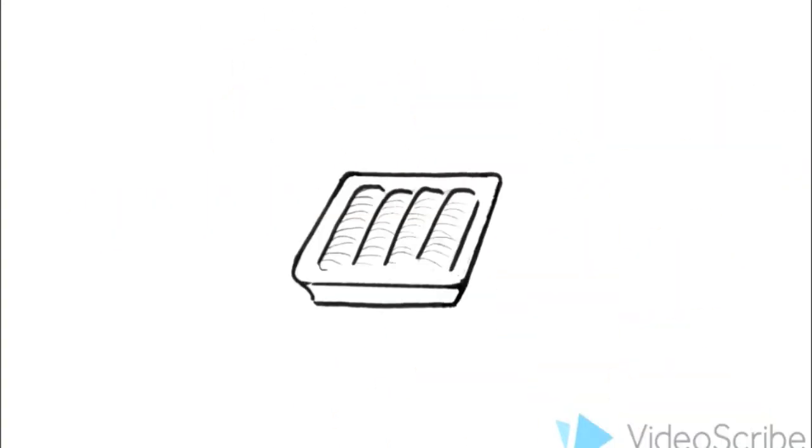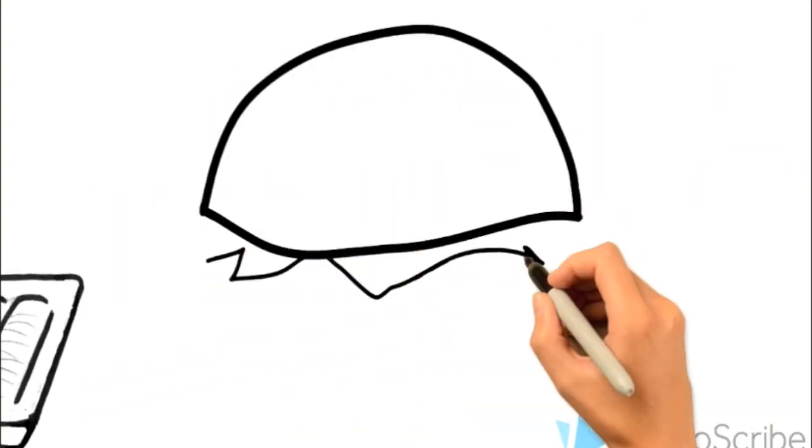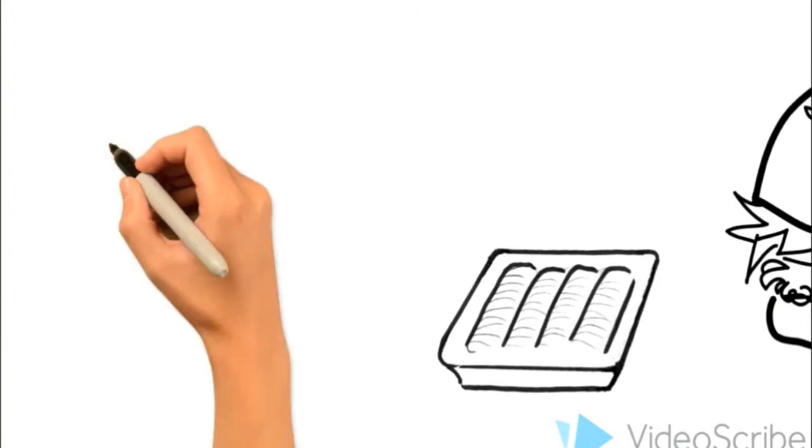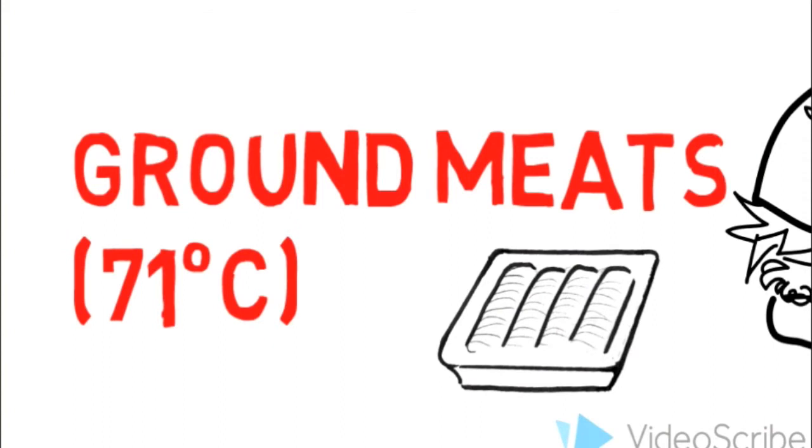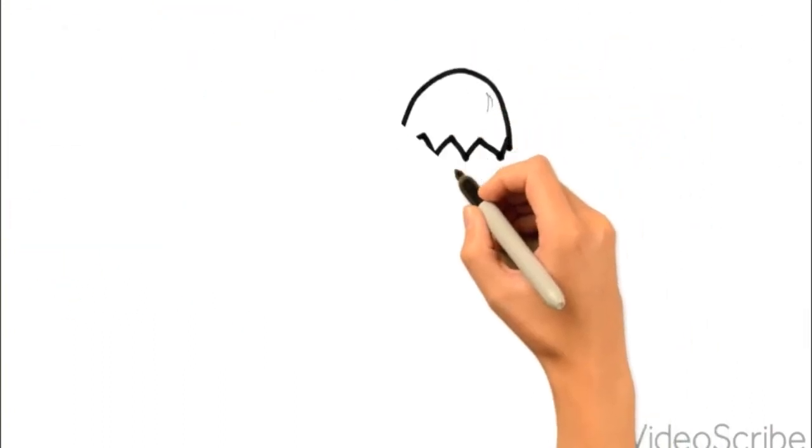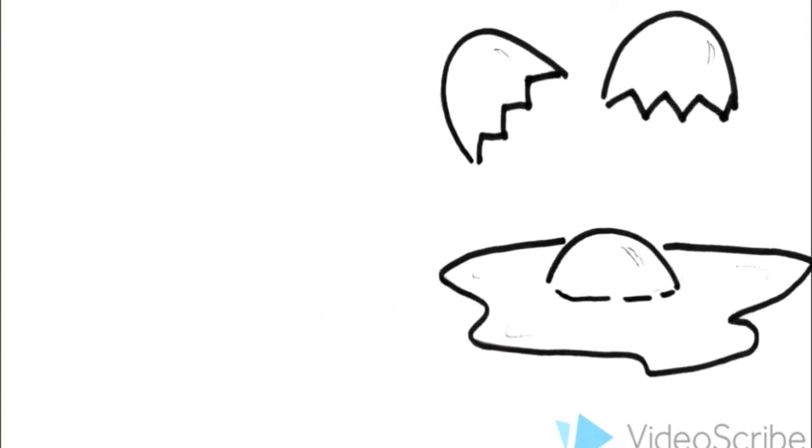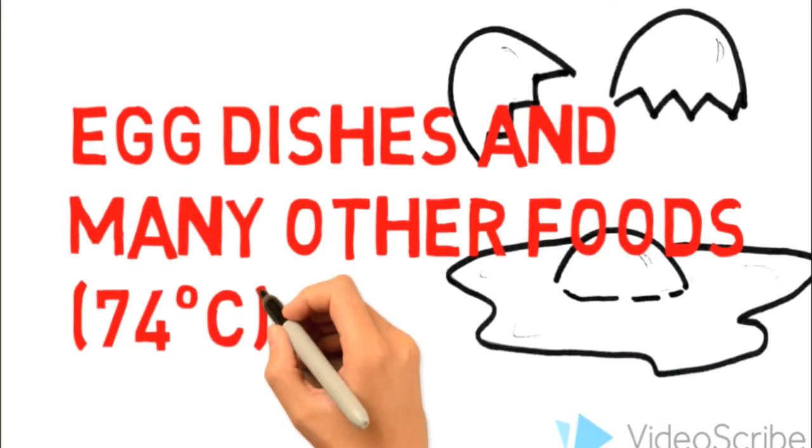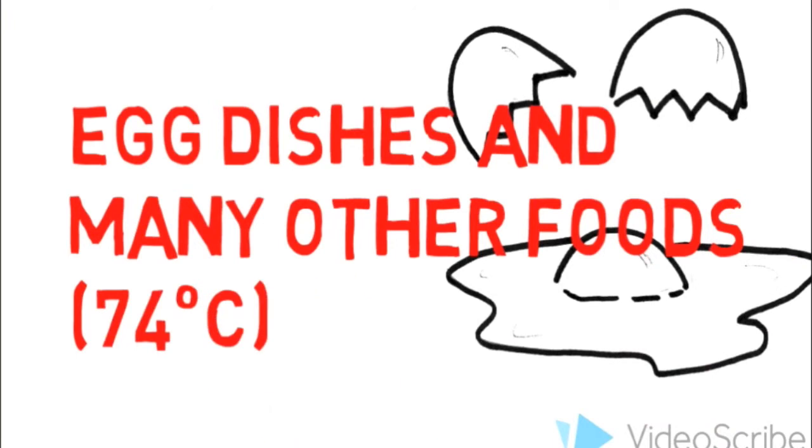For ground beef, veal, lamb, and pork, often found in things like burgers, make sure it's at least 71 degrees Celsius or 160 degrees Fahrenheit. For many other foods like leftovers and egg dishes, make sure that your food is at least 74 degrees Celsius or 165 degrees Fahrenheit.